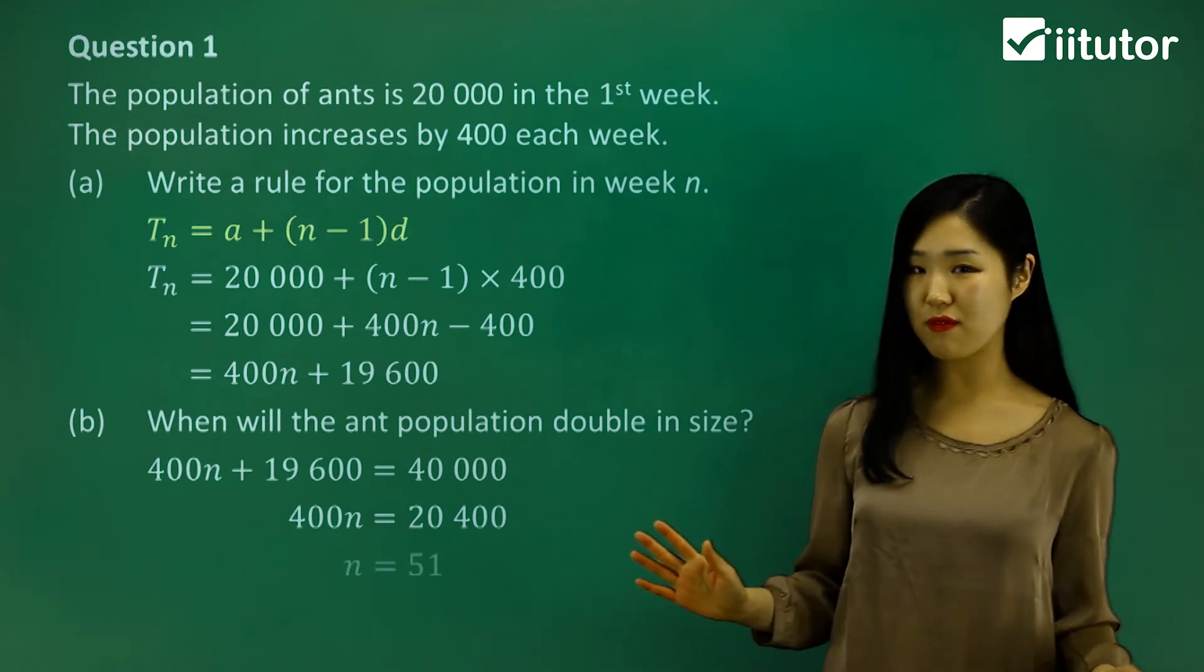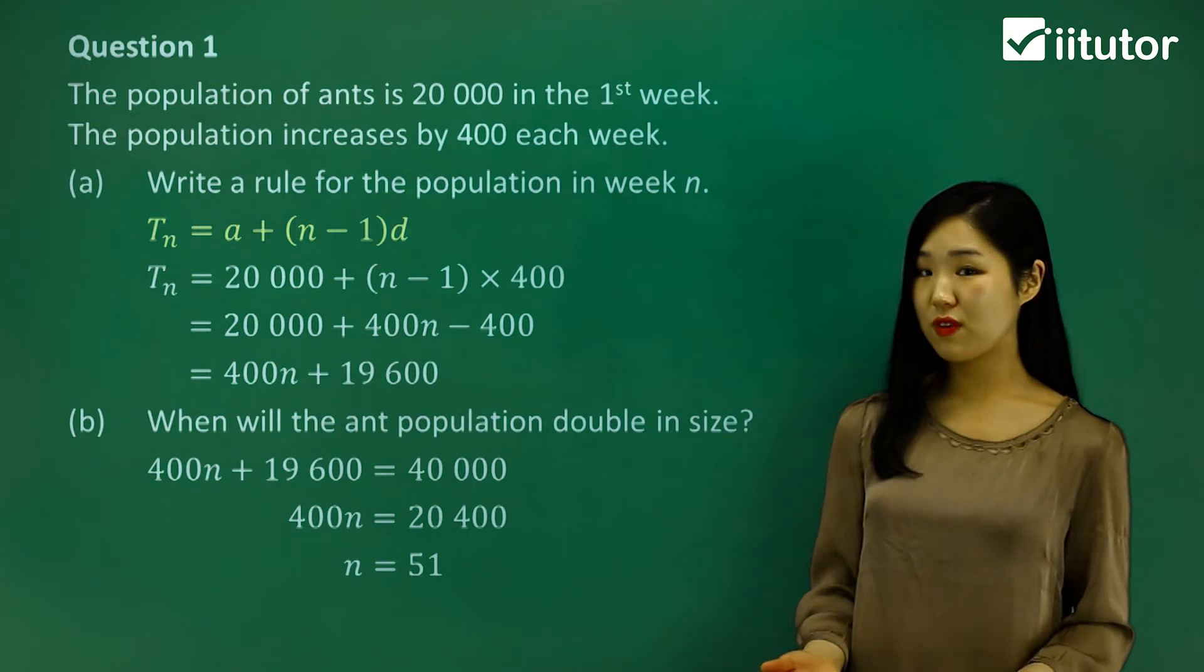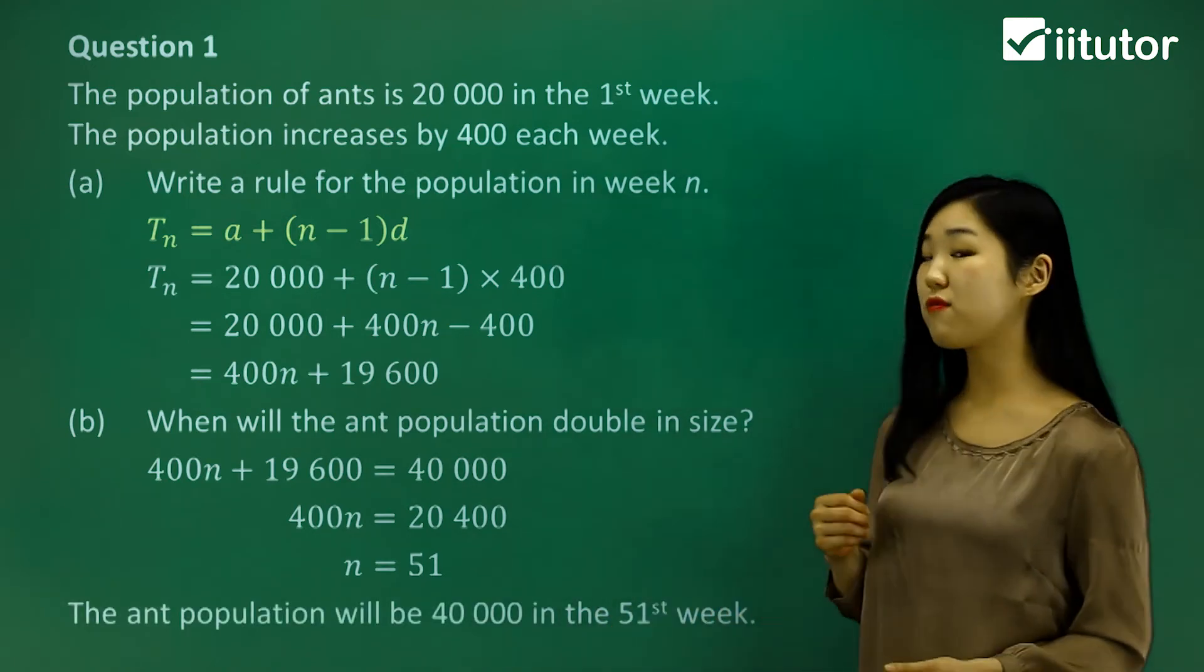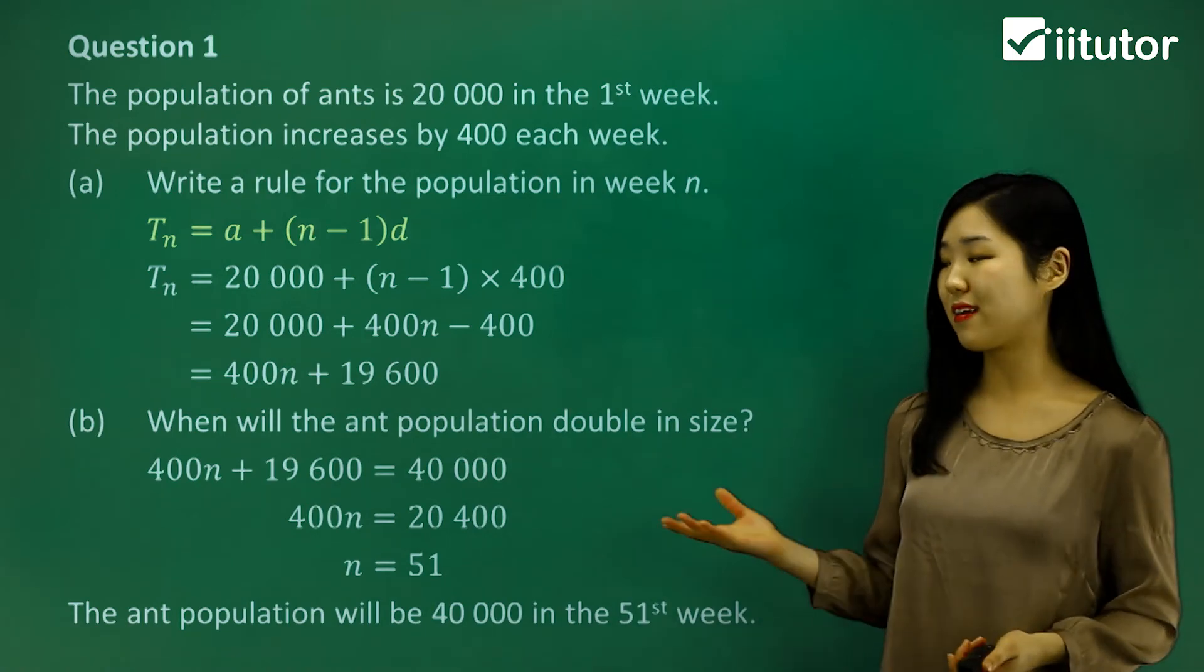Finally, to get n, divide both sides by 400. We get n equals 51. What does n equals 51 mean? It means the ant population will double in size in the 51st week.